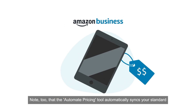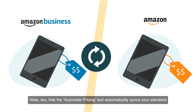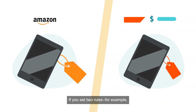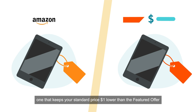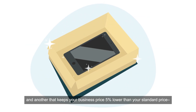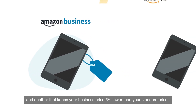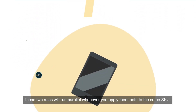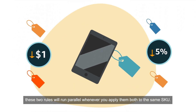The Automate Pricing Tool automatically syncs your standard and business pricing rules. If you set two rules — for example, one that keeps your standard price a dollar lower than the featured offer and another that keeps your business price 5% lower than your standard price — these two rules will run parallel whenever you apply them both to the same SKU.